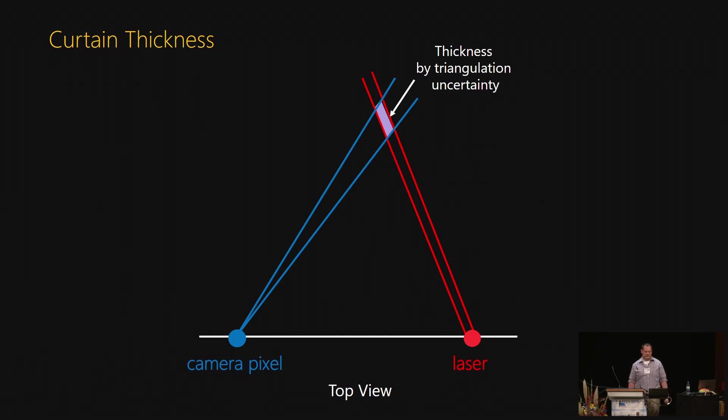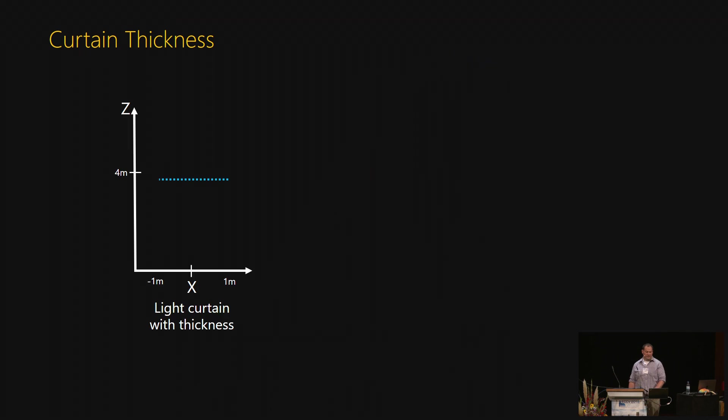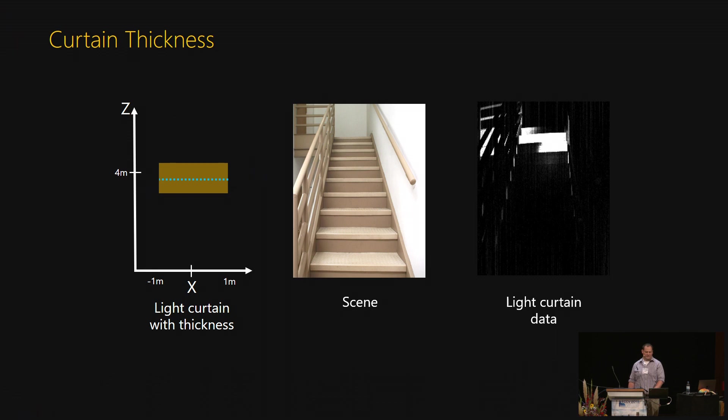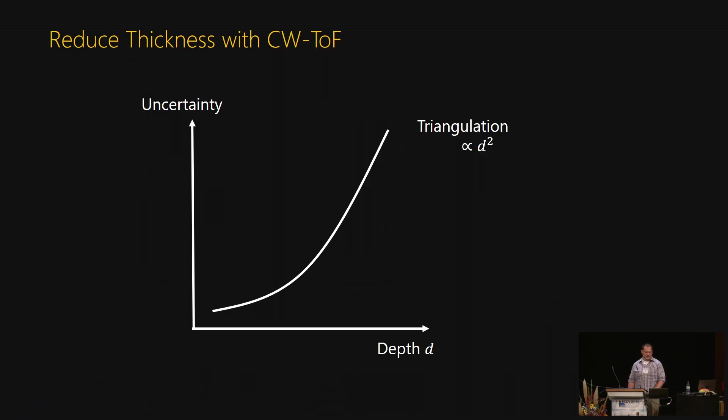One limitation of this device is curtain thickness. Since each camera pixel has a finite size and the laser has a given thickness, our light curtain has a certain thickness by triangulation uncertainty. From theoretical analysis, we know that triangulation uncertainty is proportional to the depth squared. So suppose we set a planar curtain at about four meters away. It will have a certain amount of thickness, so for this stair scene, instead of one single stair being detected, three stairs are detected. Well, this is okay sometimes, but sometimes we want finer resolution to avoid missed detections, or to avoid false detections.